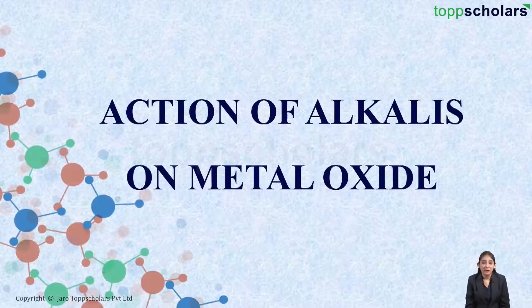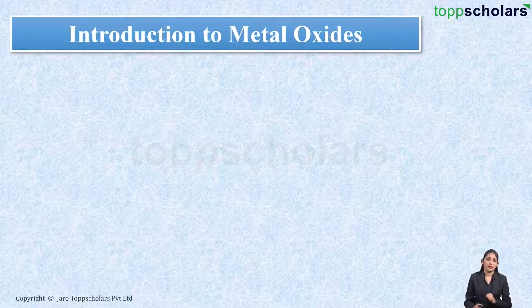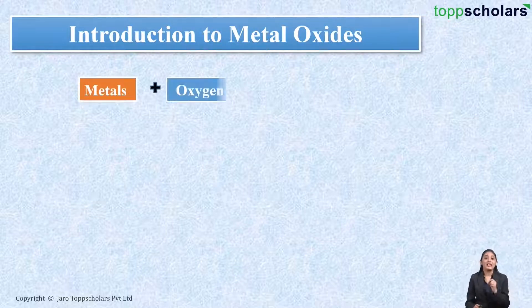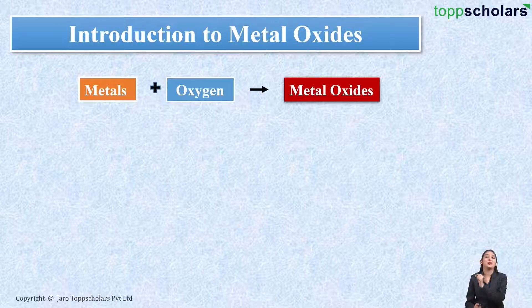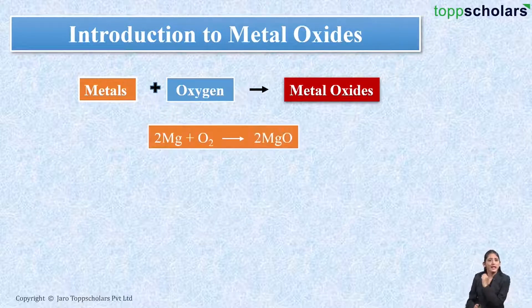Hello dear students, welcome to Top Scholars. Today we will be discussing the action of alkalis on metal oxides. A metal oxide contains metal and oxygen. Metal oxides are formed when metals react with oxygen. For example, magnesium metal reacts with oxygen resulting in the formation of magnesium oxide, that is MgO.